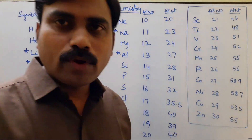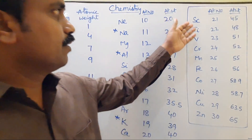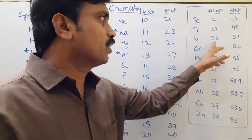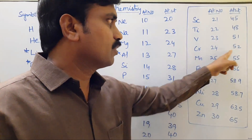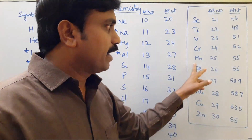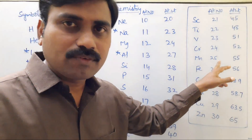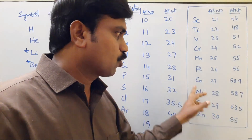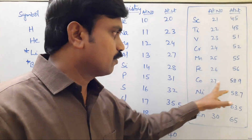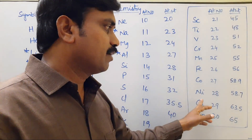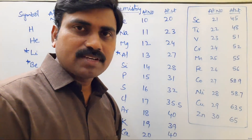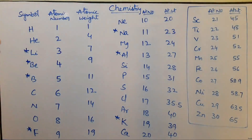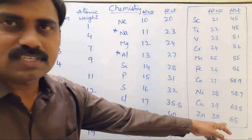From elements 21 to 30, look at Scandium to Zinc. Scandium atomic number 21, atomic weight 45. Titanium 22, atomic weight 48. Vanadium atomic number 23 and atomic weight 51. Chromium 24 and atomic weight 52. Manganese atomic number 25 and atomic weight 55. Iron atomic number 26 and atomic weight 56. Cobalt atomic number 27 and atomic weight 58.9. Nickel atomic number 28 and atomic weight 58.7. Copper atomic number 29 and atomic weight 63.5. Zinc atomic number 30 and atomic weight 65.